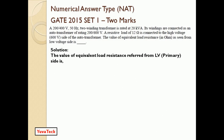The value of equivalent load resistance referred from the LV side — the low voltage primary side — always 200 in a 200/600 or 200/400 rating indicates the primary, and the denominator term indicates the secondary terminal voltage. As per the given statement, we have to find out the equivalent value of resistance referred from the LV side, that is referred from the primary side. The formula is RL divided by K squared.